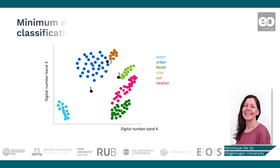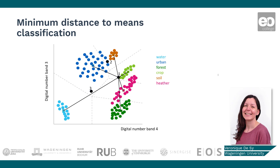In the minimum distance to the means classification, the center point or mean value of each training cluster in the feature space is determined. The distances of a new unlabeled pixel to these centers are calculated, and the pixel is then assigned to the cluster with the center nearest to it. On the slide, a feature space is shown with colored pixels belonging to a specific training class or cluster. The mean values for each cluster are represented by squares. According to the minimum distance to the means classification, pixel 1 will be assigned to the crop class, pixel 2 to the soil class, and pixel 3 to the urban class.